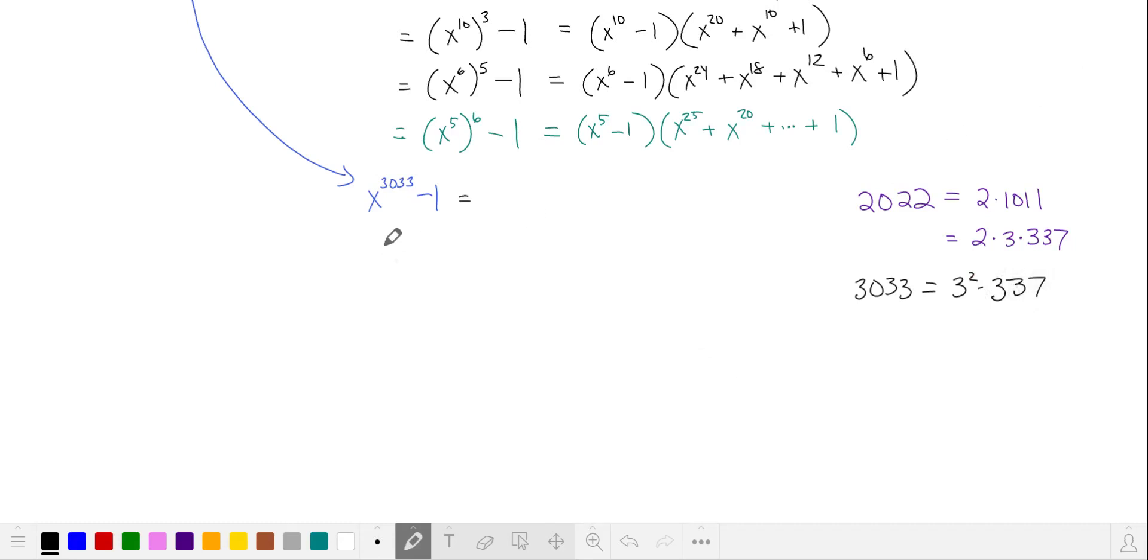So for example, one way that we can factor our expression on the left hand side, x to the power of 3033 minus 1, we can write this as the difference of powers of 1011, which means we can factor out x cubed minus 1.